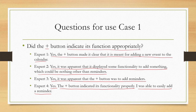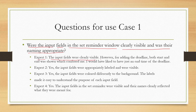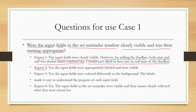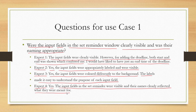Question: were the input fields in the set reminder window clearly visible and appropriately named? Expert 1 said fields were visible but having both start and end time for a deadline was confusing — just an end time would have sufficed. Experts 2, 3, and 4 agreed the fields were clearly visible and well labeled. One expert disagreed with the naming convention.